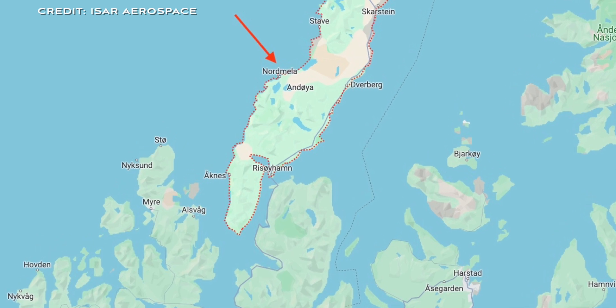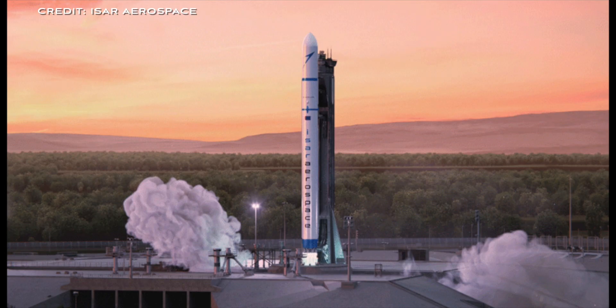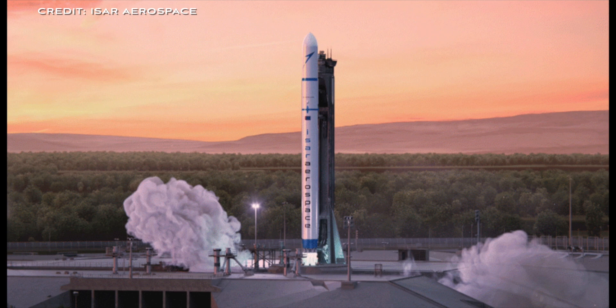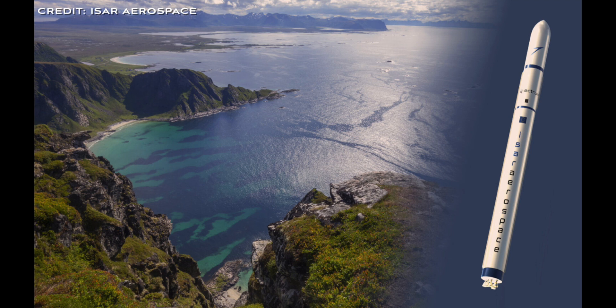Andøya Space started out providing suborbital launch facilities all the way back in 1962. Over 1,200 sounding rockets and suborbital research rockets have flown from this base. It's now branching out to providing facilities suitable for orbital launch vehicles.